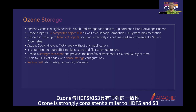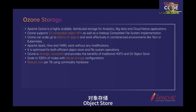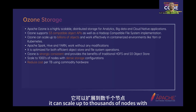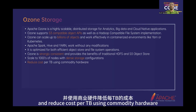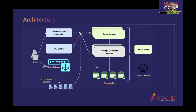Ozone is strongly consistent, similar to HDFS and S3 object store. It can scale up to 1000 nodes with dense storage configuration and hence reduces the cost per TB using commodity hardware.